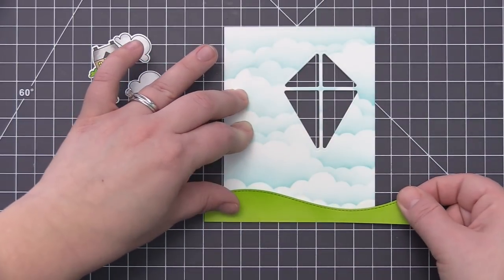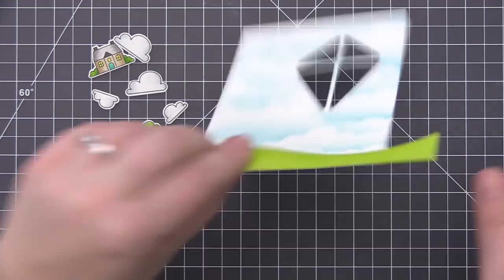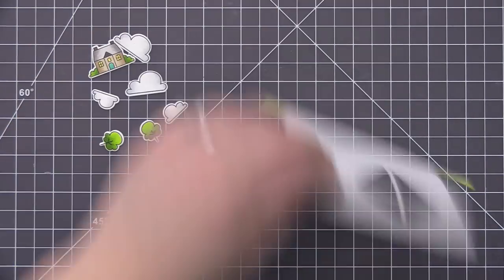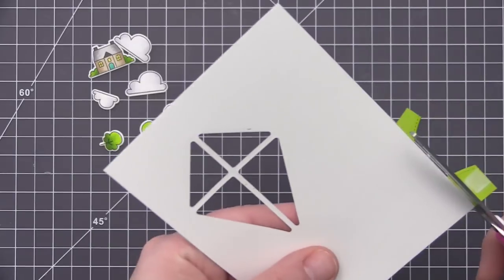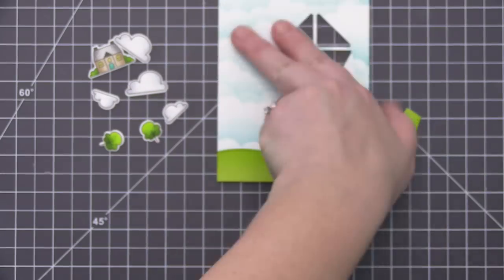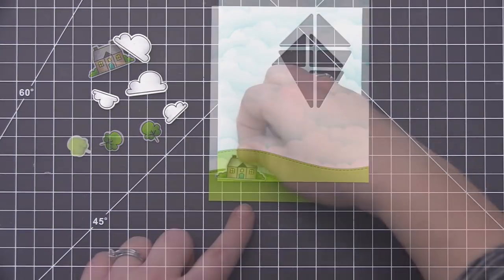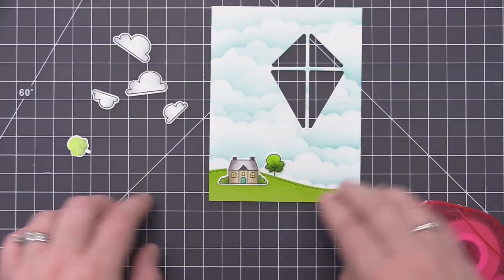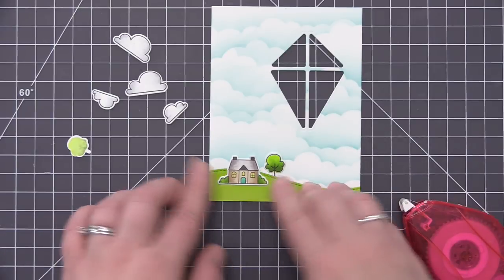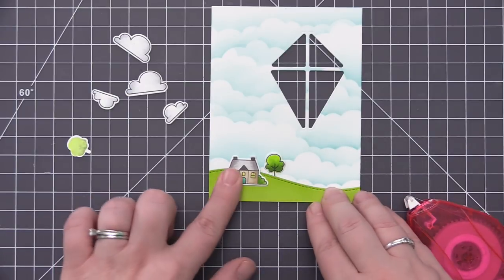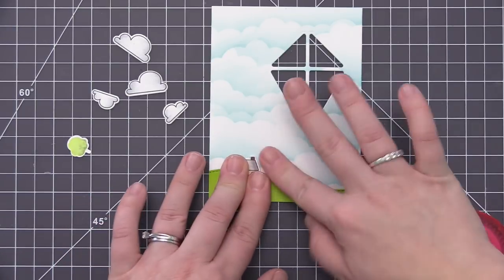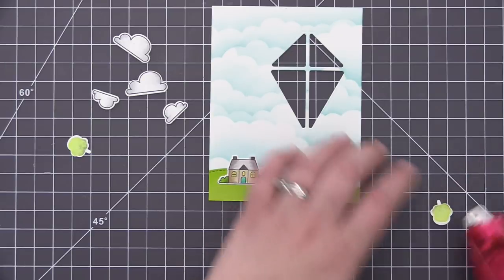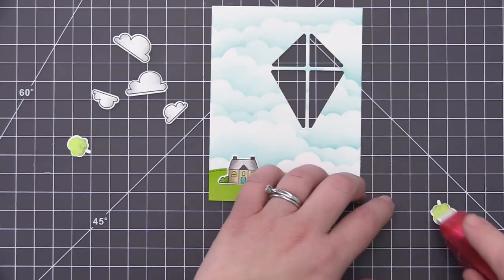For the grass, I added a little bit of twisted citron distress ink to the top edge to add some shading and make it look more dimensional and not so flat. Then I glued the grass onto the bottom of the scene and added the little house piece as well as the little tree.